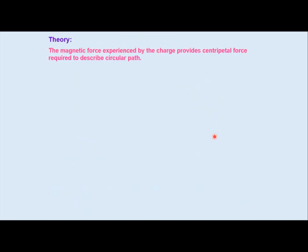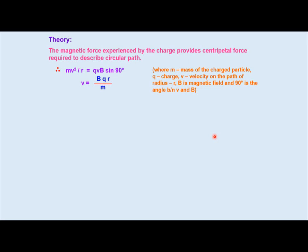The magnetic force experienced by the charge provides centripetal force required to describe circular path. So that Lorentz force is balanced by the centripetal force. As we know that centripetal force mv²/r must be governed by the Lorentz force qvB sin θ, that is sin 90° in this cyclotron case, where m is mass of the charged particle, q is charge, v is velocity of the particle, r is B is magnetic field and 90° is the angle. From here the velocity can be deduced: v = BqR/m.